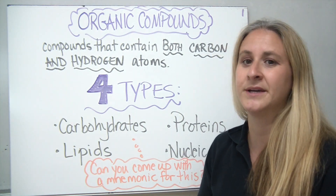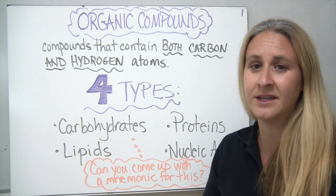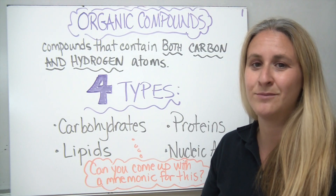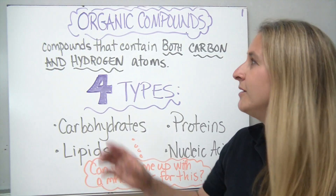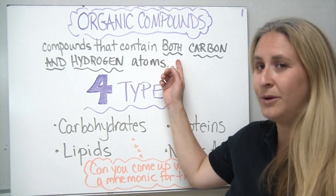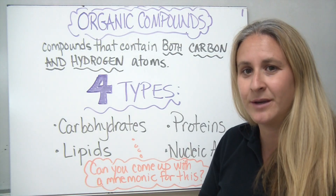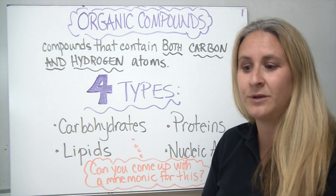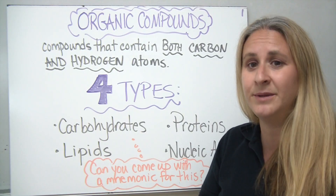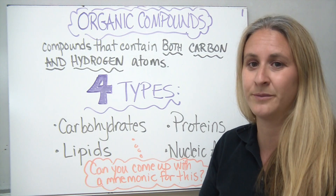Today we're going to talk about organic compounds. Previously we had talked about inorganic compounds and said that inorganic compounds were usually simpler and they did not contain both carbon and hydrogen. On the flip side, organic compounds are compounds that contain both carbon and hydrogen atoms in them. So when you look at their chemical formula, the chemical formula will have a C and it will also have an H. It doesn't mean that it's only limited to those two types of atoms, but they have to have at least carbon and hydrogen in the formula.